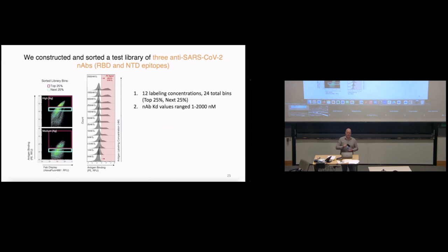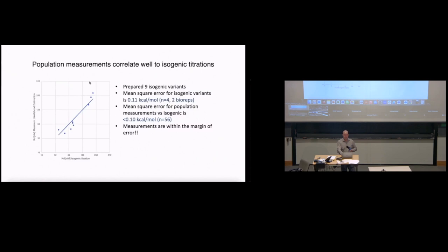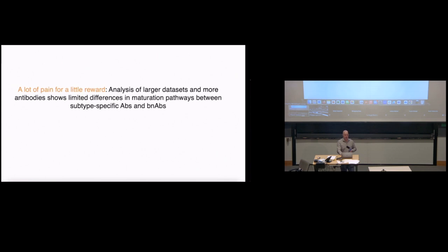What we did is we tested this with three antibodies at once. We did this at 12 labeling concentrations over about 2,000 fold range in concentration. When we back out the KDs, this is fluorescence versus concentration for four representative variants, we get really nice titration curves for each of these. When we actually plot the KD by this maximum likelihood estimation versus isogenic titration, we get mean squared error under the mean squared error that you can get by isogenic titration. So we're pretty spot on and we're pretty confident that we're getting accurate values. In the interest of time, I'm going to just say we got a lot of pain for that, probably five student years across Brian and Monica to develop this platform.